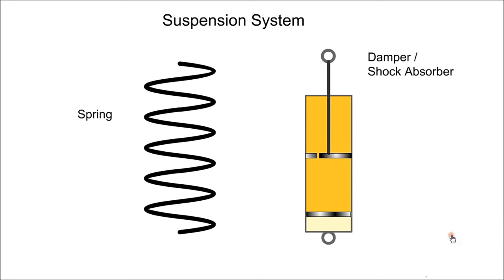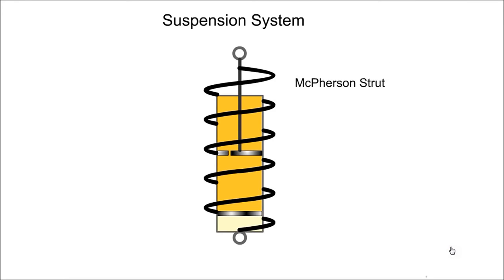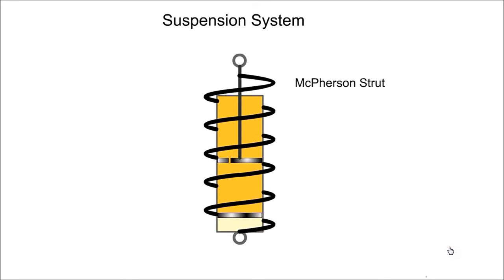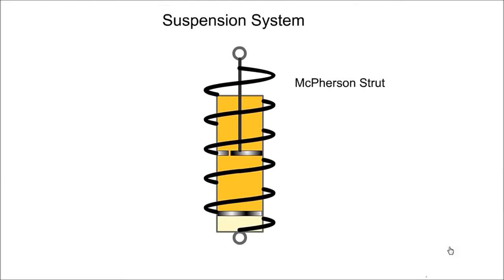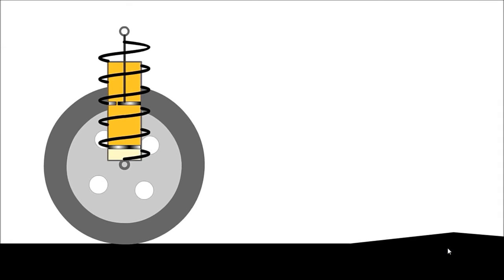When the top rod moves down, the gas below the bottom piston is compressed to allow for the extra rod volume. A spring and damper are often combined in one unit called a MacPherson strut. Here we see the MacPherson strut in operation. It provides comfort for the occupants and maintains the wheel in contact with the road.